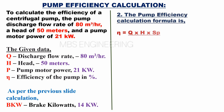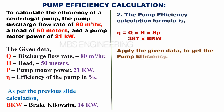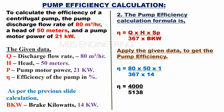Pump efficiency Eta equals Q into H into SP, divided by 367 into brake kilowatts. Applying the given data: Eta equals 80 into 50 into 1, divided by 367 into 14. Pump efficiency Eta equals 4000 divided by 5138. Therefore, the pump efficiency Eta is 77.85%.